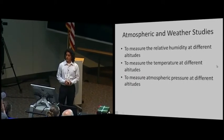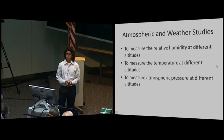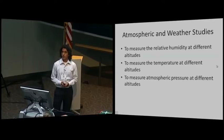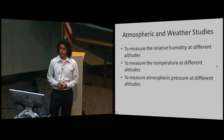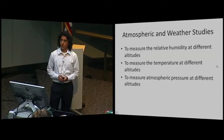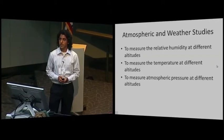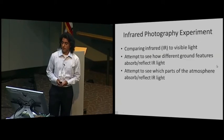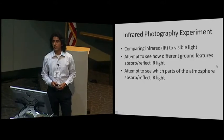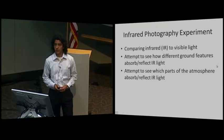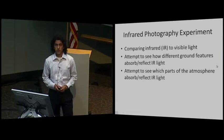The atmospheric and weather studies experiment was with the aim of studying and comparing relative humidity, pressure, and temperature values in different layers of the atmosphere. We used Hobo data loggers and balloon set easy weather stations with flight computers for this. The infrared photography project was to test the validity of our hypothesis that infrared light could reveal more about the Earth's atmosphere and features than just visible light alone. For this, we used two Canon PowerShot programmable A570 cameras.